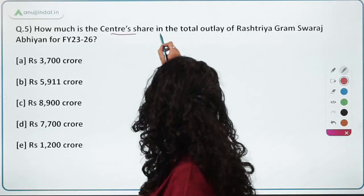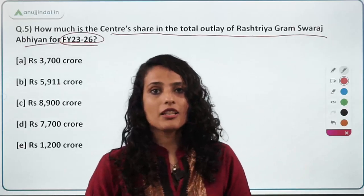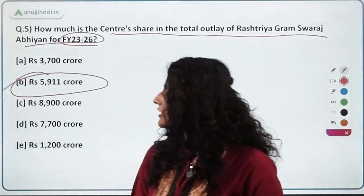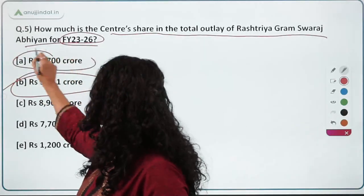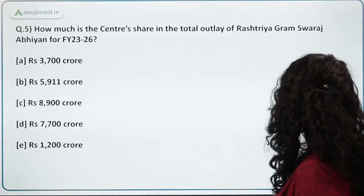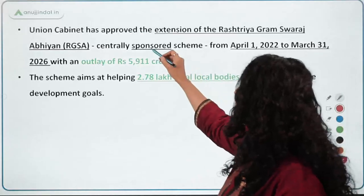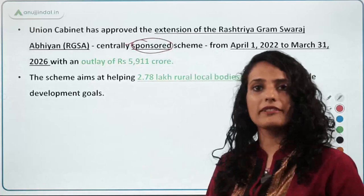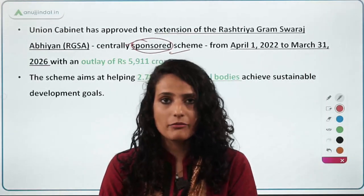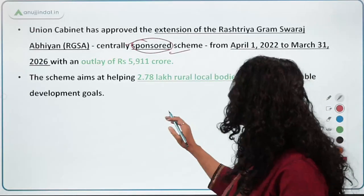The next question asks about the centre's share in the total outlay of the Rashtriya Gram Swaraj Abhiyan (RGSA) for financial year 2023–26. The central share is Rs. 3,700 crore. RGSA is a centrally sponsored scheme — meaning central and state governments share funding. The scheme targets 2.78 lakh rural local bodies to achieve Sustainable Development Goals, increased from the earlier 2.55 lakh rural bodies.